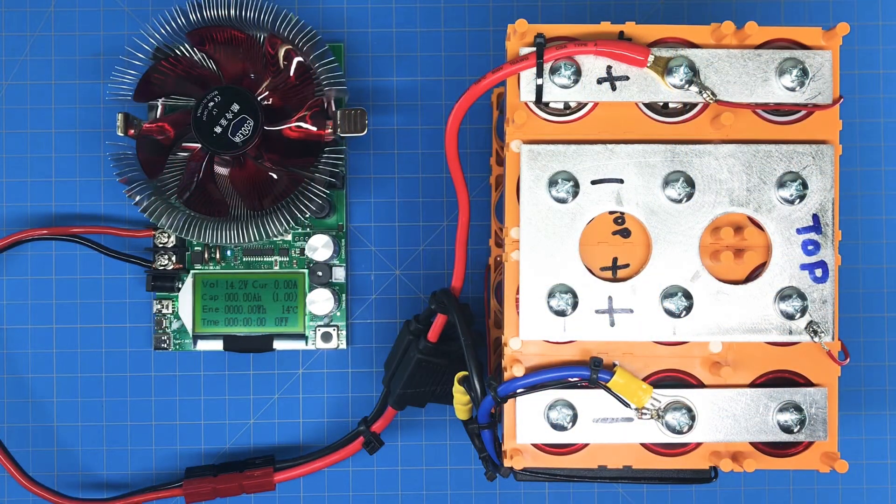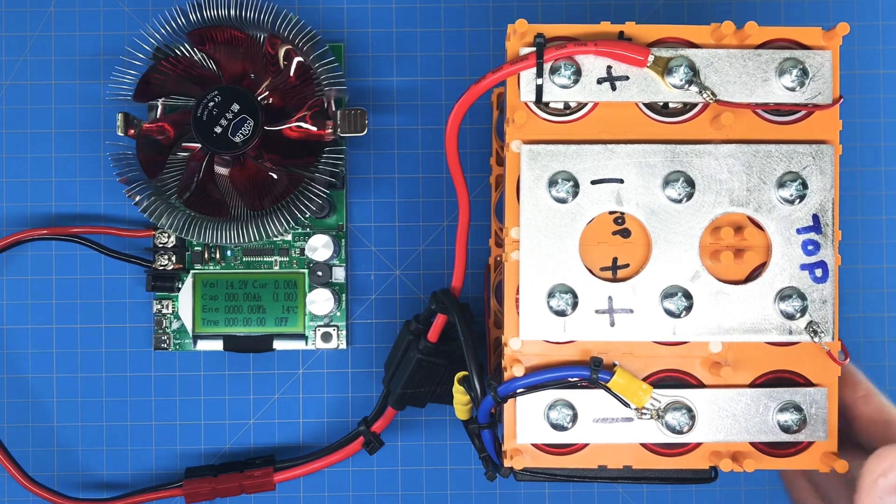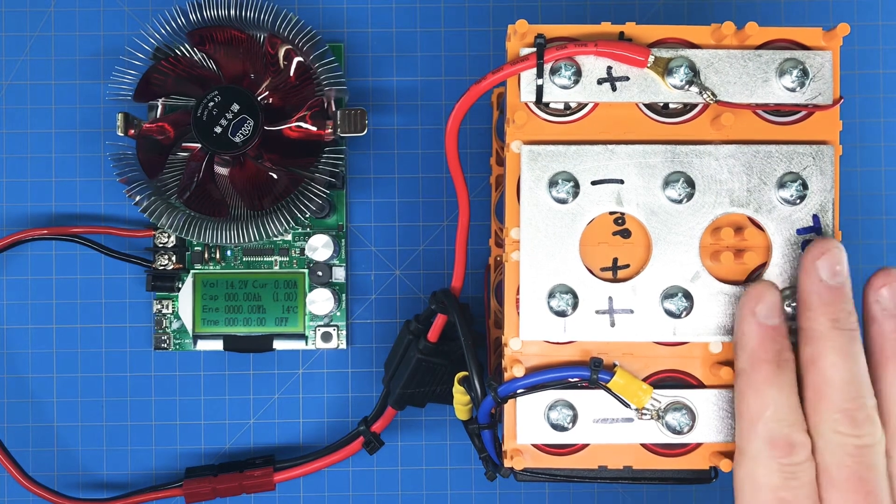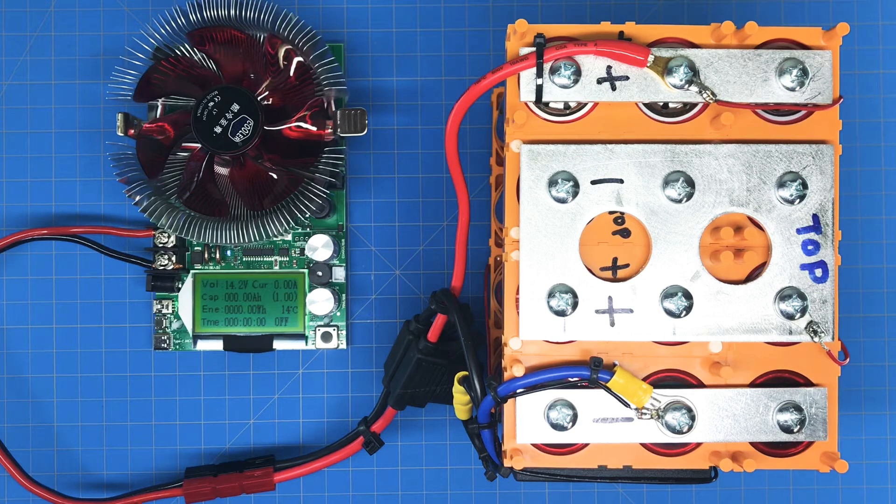We're all set up for the capacity check of this completed battery. If these cells were brand new with this setup, we'd be expecting about 24 amp hours at 14.6 volts.